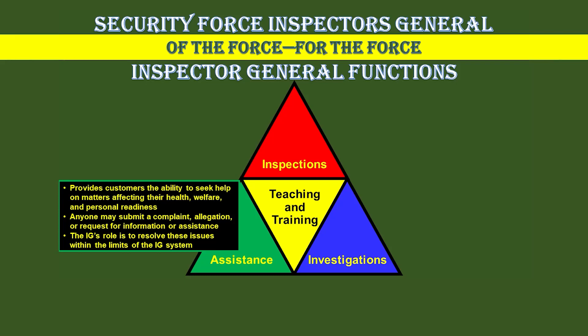Assistance is the IG function that provides soldiers, family members, Army civilians, retirees, and contract employees the ability to seek help from the IG on matters affecting their health, welfare, and personal readiness. The IG's role is to resolve these issues within the limits of the IG system.